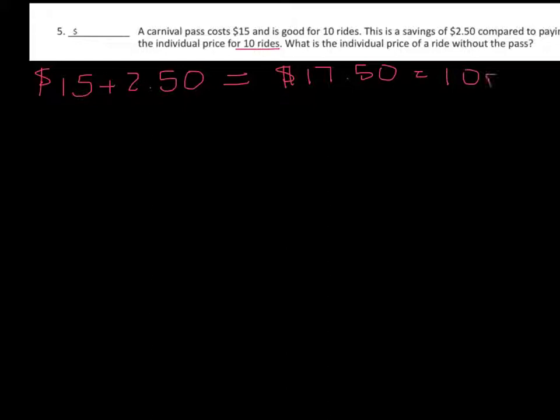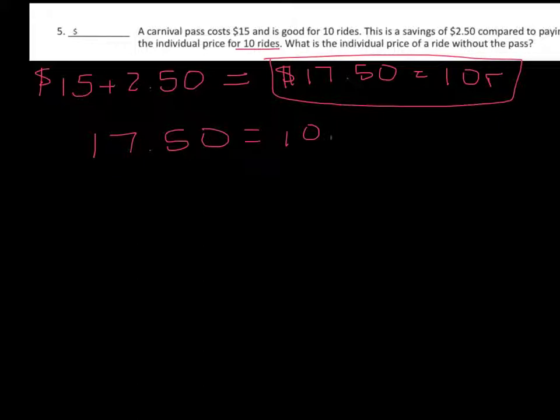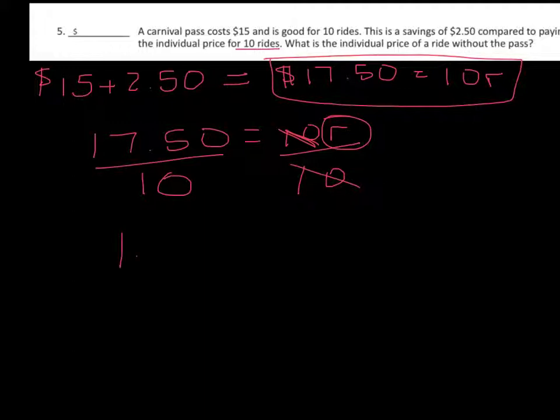$17.50 equals 10R. Now when we have an algebraic expression here, $17.50 equals 10R, to get rid of the 10 we divide both sides by 10. You may have known that intuitively, but if problems are harder and the numbers are different you may not. When you divide both sides by 10, that cancels out our 10 here and you're left with one ride. So $17.50 divided by 10 is $1.75 equals R. So the price for one ride is $1.75.